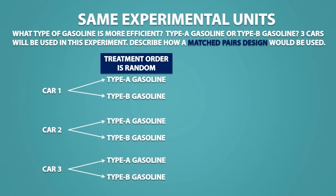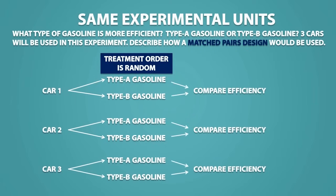For example, we could drive with type B gasoline first, then once all the gasoline is finished, we would fill up the car with type A gasoline using the same quantity. At the end of the experiment, we would compare the efficiency of the gasoline.